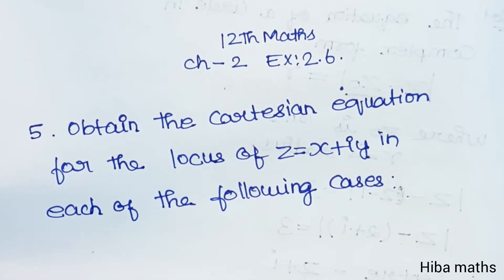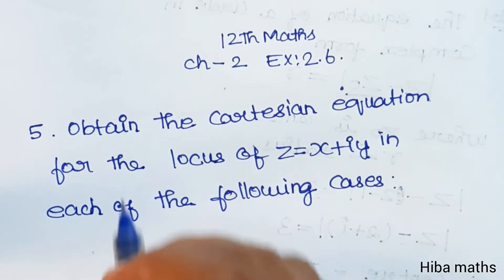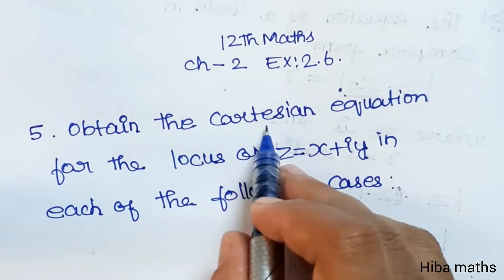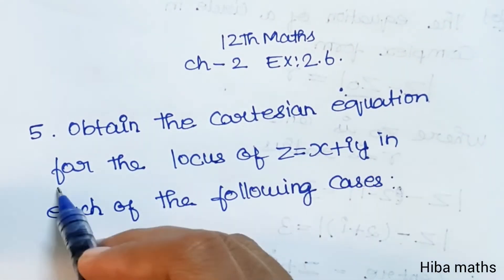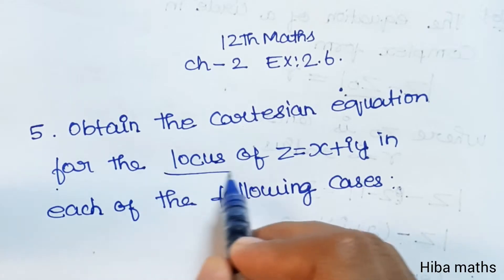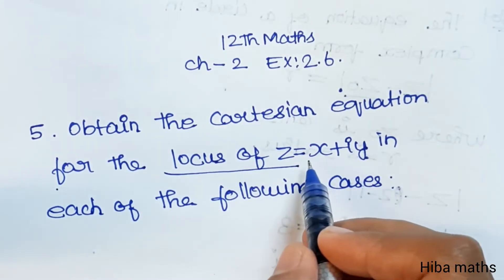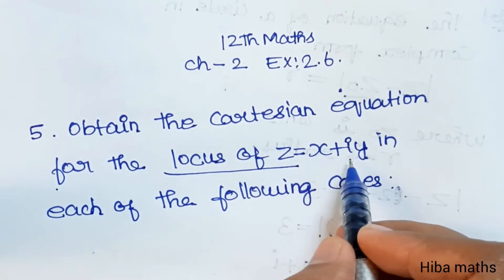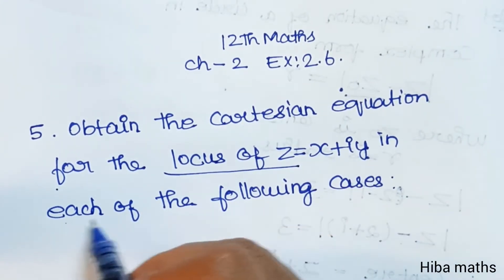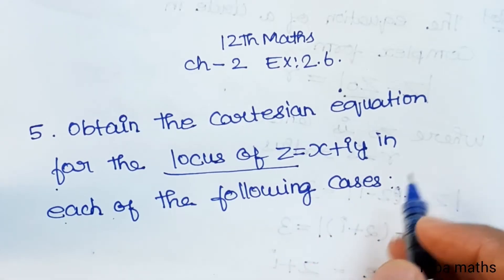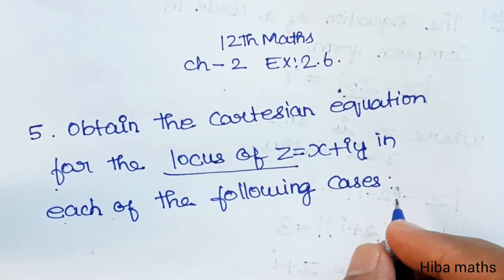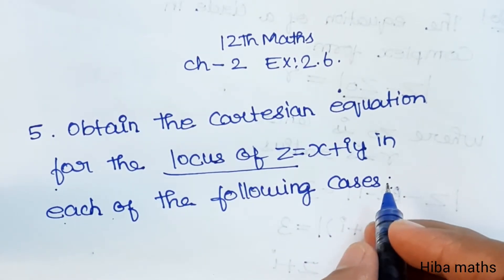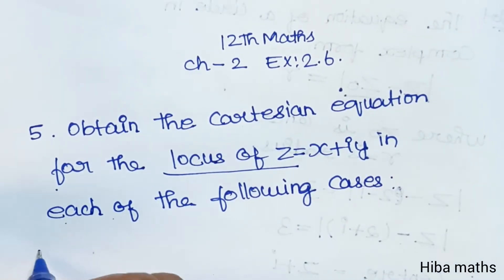Hello students, welcome to Hibamax 12 standard, Chapter 2, Exercise 2.6, 5th question: Obtain the Cartesian equation for the locus of z, where z equals x plus iy, in each of the following cases. What is the Cartesian equation?